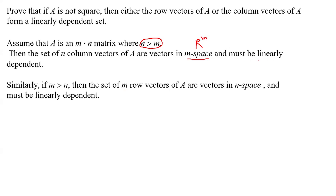They must be linearly dependent. Why? Because when N is more than M, you have more than M vectors. Only M vectors span the space, so if you have more than M of them, they are definitely linearly dependent.